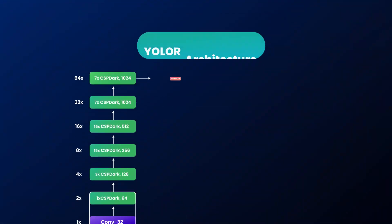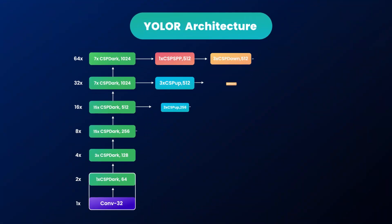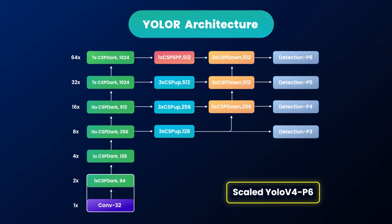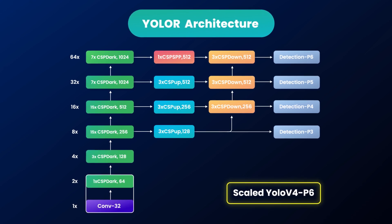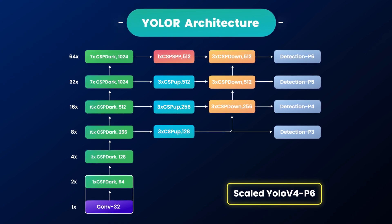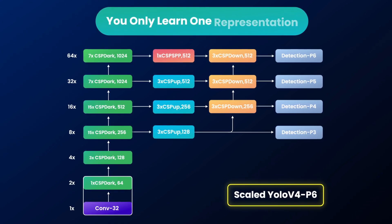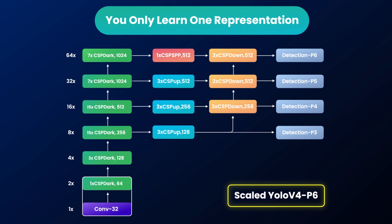YOLO-R is the incremental update to the Scaled YOLO-V4 architecture developed by the same team. It stands for 'You Only Learn One Representation.'